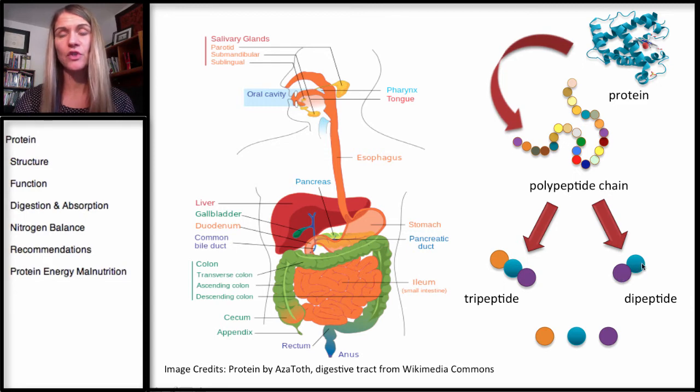So this is just a two amino acid unit, and this is a three amino acid unit. Enzymes again will then break down these di and tripeptides into individual amino acids.